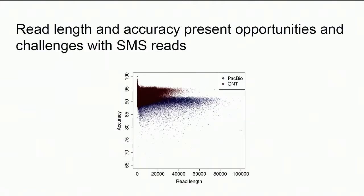Looking at raw data from newer versions of this sequencing, the reads produced range in length between a few thousand to a few tens of thousands of base pairs. The accuracy of sequences produced ranges between about 80 and 95%. The two clusters shown are from the two main sequencing platforms: Oxford Nanopore in red and PacBio in blue.